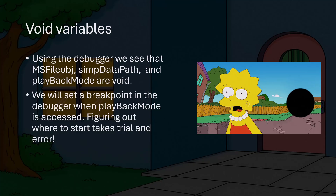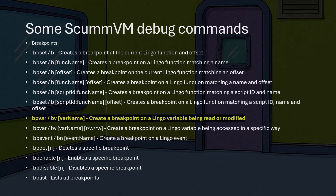Figuring out what variables to look at takes trial and error, and it's not always obvious where to start. What I'm showing you in this video represents many hours of debugging, troubleshooting, and problem solving. Here are some ScummVM debug commands — if you type 'help' in the ScummVM debugger, you can get a much more complete list. The command we are currently interested in is highlighted in yellow. 'BP var' creates a breakpoint when a Lingo variable is read or modified, and the breakpoint will pause program execution so we can see where in the code that particular variable is being used.